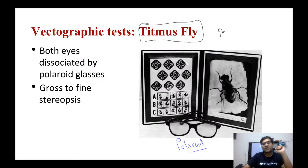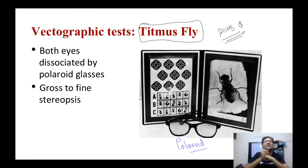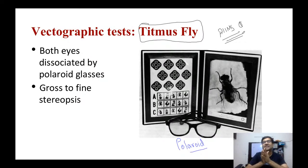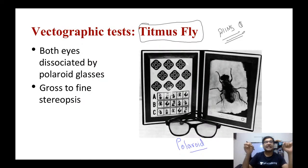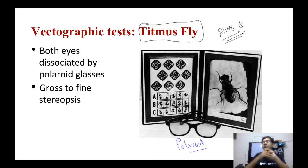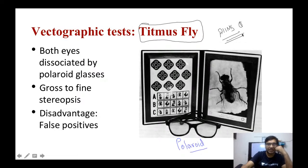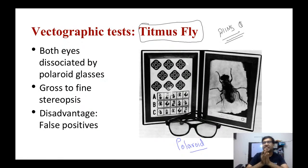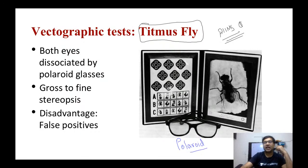This was a previous year AIIMS question, so it is very important to know everything about stereopsis. The only problem with the Titmus fly test is that sometimes the patient does not actually have stereopsis but you can still get a positive result. So the only disadvantage of the Titmus fly test is that it has a lot of false positives.